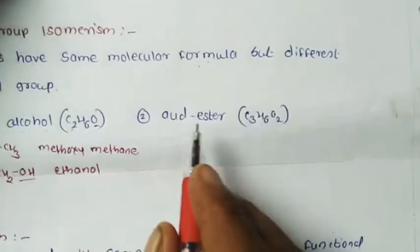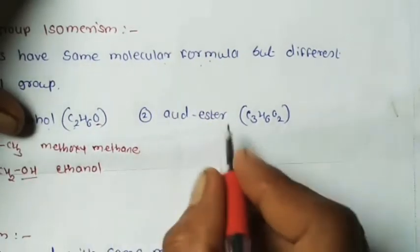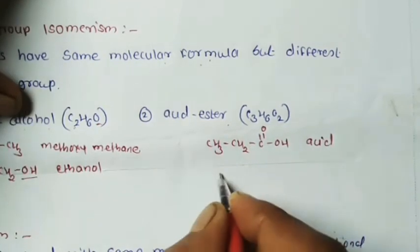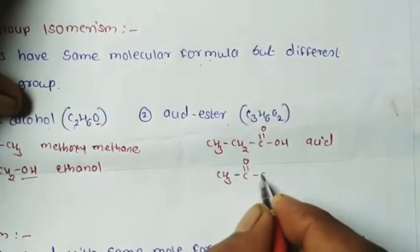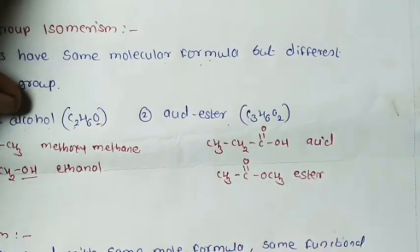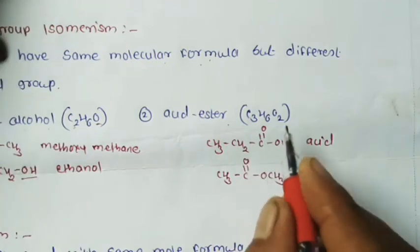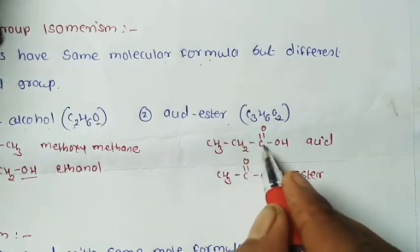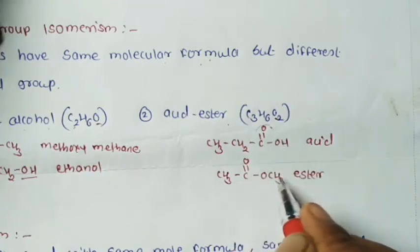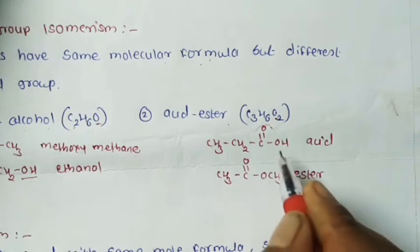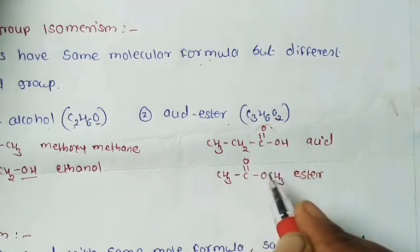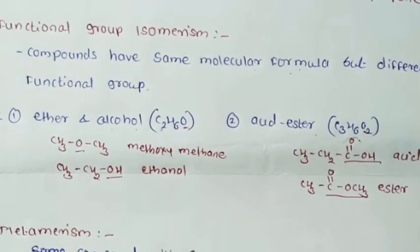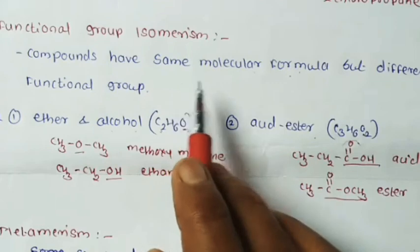A second example of functional group isomerism: acid and ester with molecular formula C3H6O2. First, CH3-CH2-COOH is a carboxylic acid. Second, CH3-CO-OCH3 is an ester. Molecular formula is the same, but the functional group is different — here the functional group is acid, and here it is ester. This is called functional group isomerism.